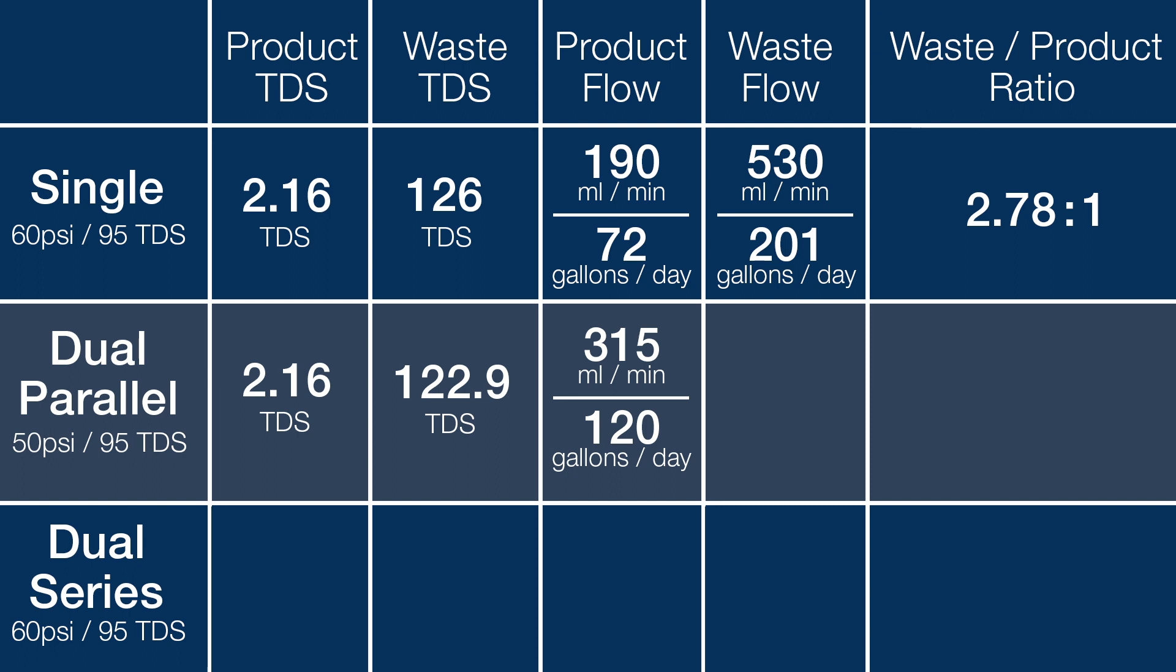As expected with the two membranes and the two separate waste lines, the total waste water also almost doubled to 980 milliliters a minute, or almost 373 gallons of waste water a day, which is a 3.11 to 1 waste to product water ratio. The dual parallel membranes have a slightly higher ratio than a single membrane and more waste water in this case, which is likely related to the reduced water pressure from the increased flow rates.